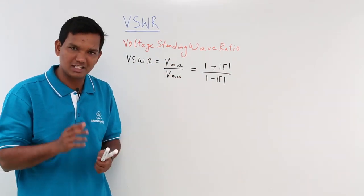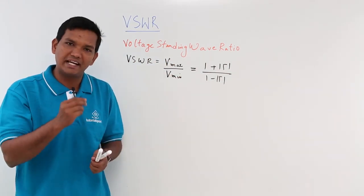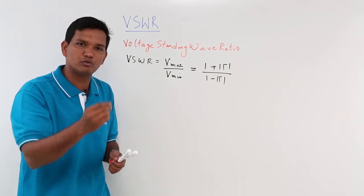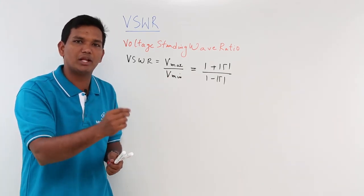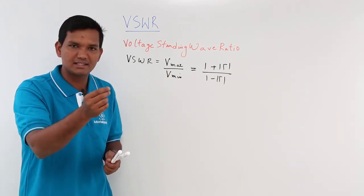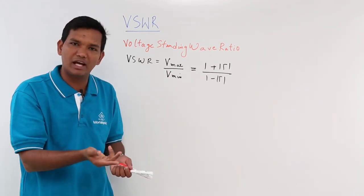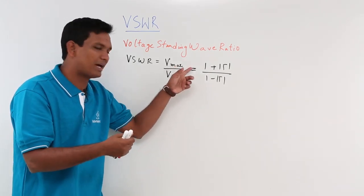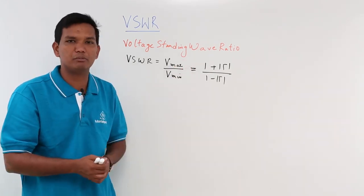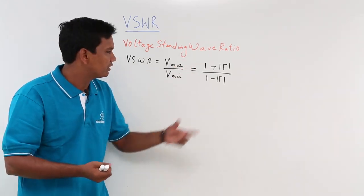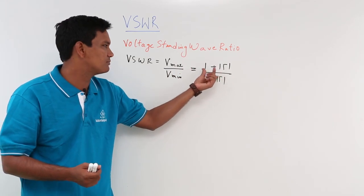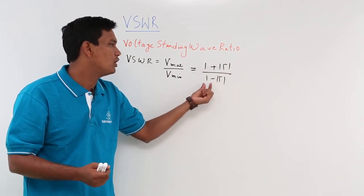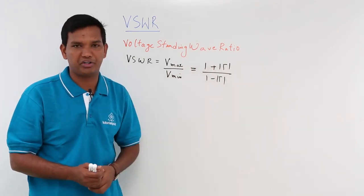On a transmission line, a sinusoidal voltage is traveling. At some point we will have Vmax and at some point we will have Vmin. So VSWR is the ratio of that maximum to minimum voltage, which in terms of the reflection coefficient comes out to be (1 + |τ|) / (1 − |τ|).